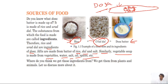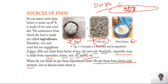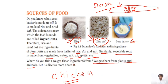We get these ingredients from plants and animals. Rice and urad dal come from plants. Chicken, on the other hand, comes from animals — you don't get chicken from plants. If you like to eat a chicken burger at KFC, that's from an animal. So our food sources are plants and animals.